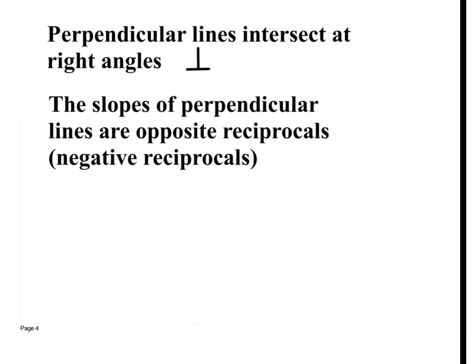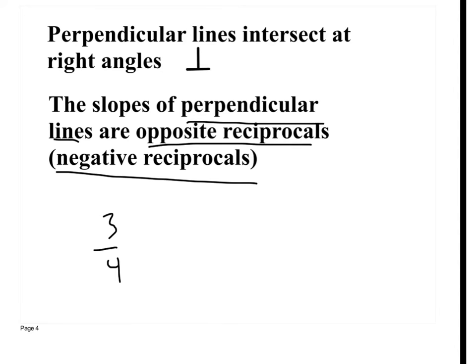Perpendicular lines intersect at right angles. This is the symbol they use for perpendicular lines — it's an upside-down T. What you need to know about perpendicular lines is that their slopes are opposite reciprocals, also known as negative reciprocals. A reciprocal is a fraction flipped upside down. So the reciprocal of three fourths is four thirds, and the negative reciprocal of three fourths is negative four thirds.